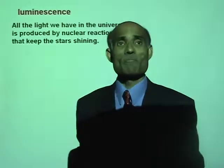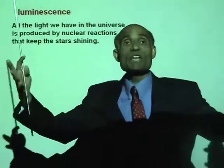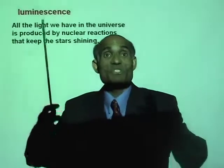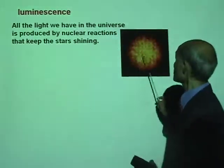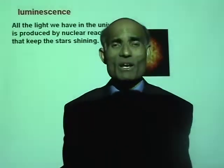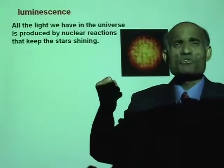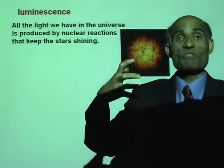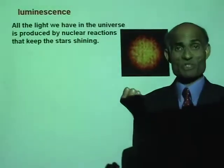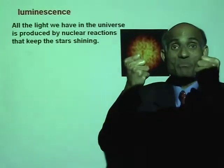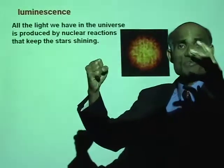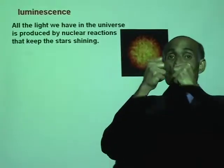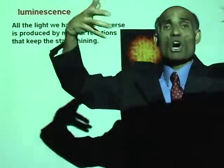Luminescence — what is that? All the light we have in the universe is actually produced by nuclear reactions that keep the stars shining. Inside a star, the temperature is so high. Our star's inside temperature is about 15 million degrees Celsius. At that very high temperature, the simple atoms of hydrogen collide against each other, fuse to become helium — nuclear fusion — and it produces a lot of energy.